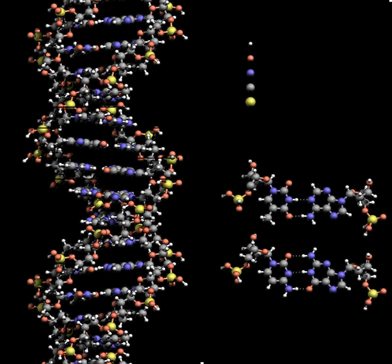DNA can be twisted like a rope in a process called DNA supercoiling. In its relaxed state, a strand usually circles the axis of the double helix once every 10.4 base pairs, but if the DNA is twisted, the strands become more tightly or more loosely wound. If twisted in the direction of the helix, this is positive supercoiling and the bases are held more tightly together. If twisted in the opposite direction, this is negative supercoiling and the bases come apart more easily. In nature, most DNA has slight negative supercoiling introduced by enzymes called topoisomerases, which also relieve twisting stresses during transcription and DNA replication.